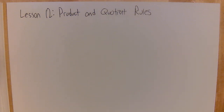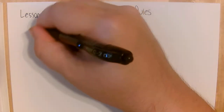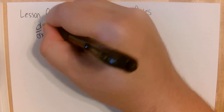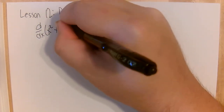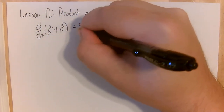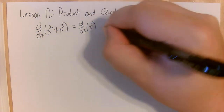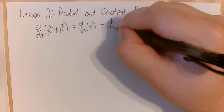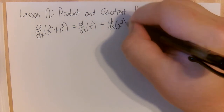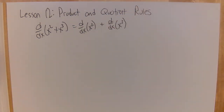Welcome to lesson 12. On the previous lesson, lesson 11, we learned that derivatives work pretty well with adding and subtracting functions. So if you wanted to do the derivative of x squared plus x cubed, that just amounts to doing each one separately. The derivatives can be seen to ignore the plus sign, and the same would work for negative signs as well. That's pretty convenient for addition and subtraction.